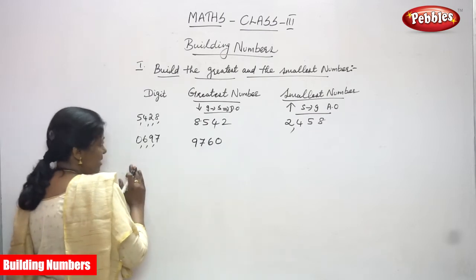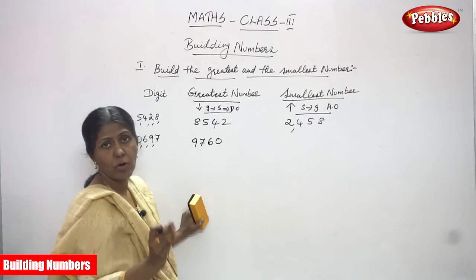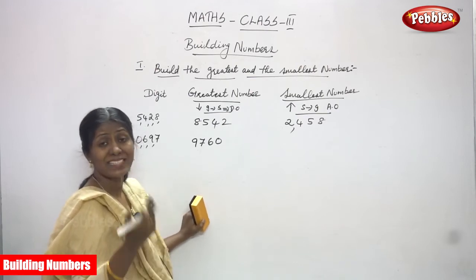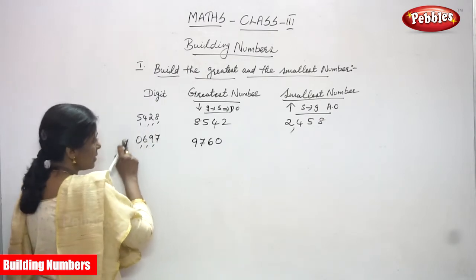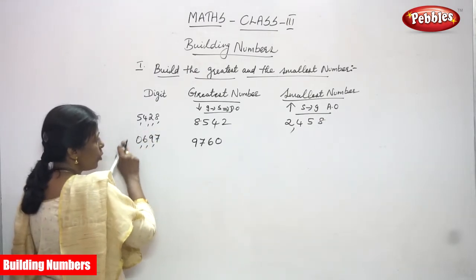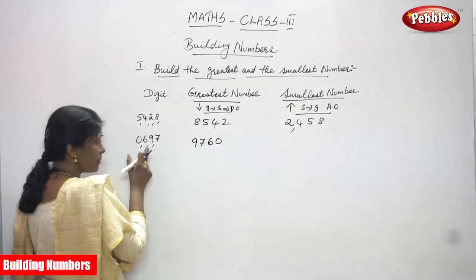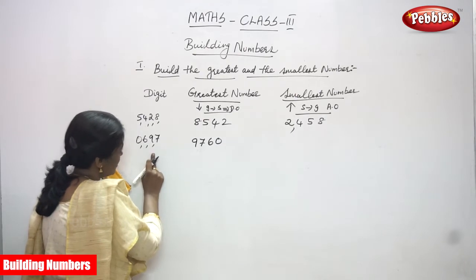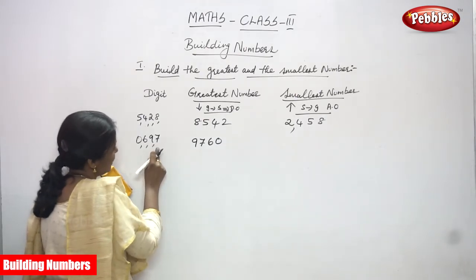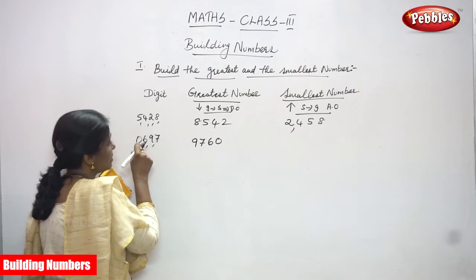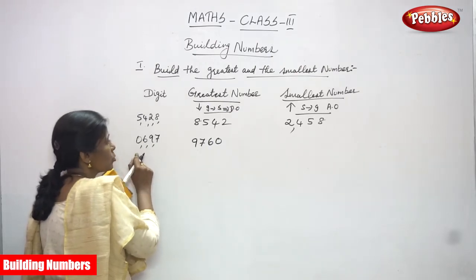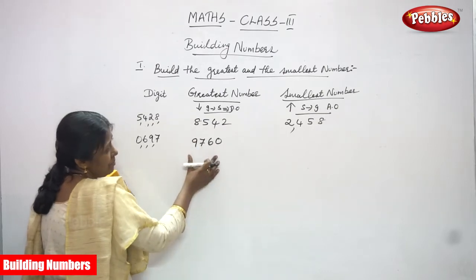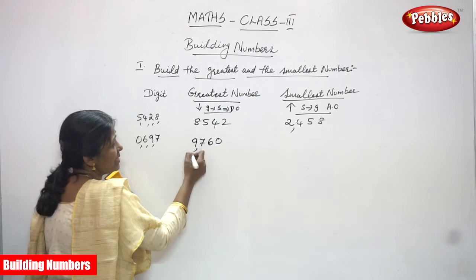To build the greatest number, arrange all numbers in descending order — that means decreasing order, greatest to smallest. From these four digits, 9 is the greatest, then 7 is the first greater, 6 is the second greater, and 0 is the least number. So the greatest number is 9,760.